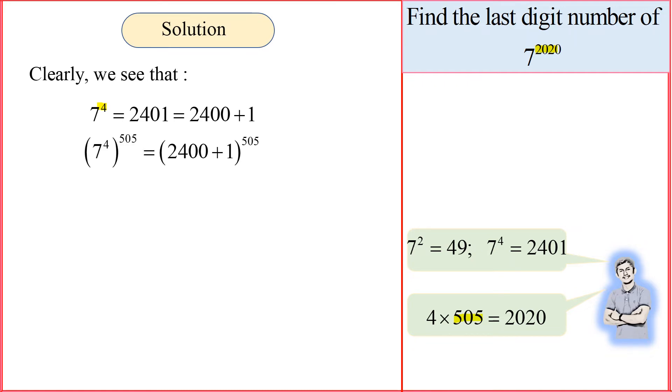So I put the bracket over there and put the power of 505 there, so it becomes both sides. In here, I take 2401 into 2400 plus 1 there. So technically, the power is 505, simply, right?